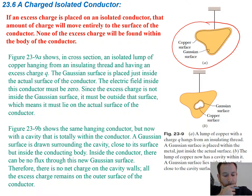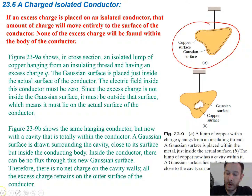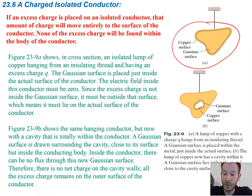The next figure shows the same conductor, but it now has a cavity that is totally within the conductor. A Gaussian surface is drawn inside of the cavity, close to its surface but inside the actual conducting body. Through this Gaussian surface we know there can be no flux, because there's no electric field inside of the conductor. Therefore, through this surface there can be no flux, which means if there's no flux, there's no enclosed charge. So all of that excess charge must still be going to the outer surface.